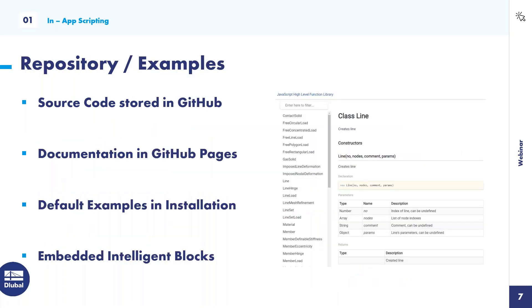We store our functions in an open source library accessible under our GitHub account. If you want to contribute, report a bug, or request a feature, feel free to visit our GitHub account. The GitHub page lets you find the right arguments and types for all functions. There are also examples in our GitHub repository, and you can find default examples under your installation files. Additionally, in Dlubal Center you can find hundreds of JavaScript scripts embedded in blocks for all types of structures.